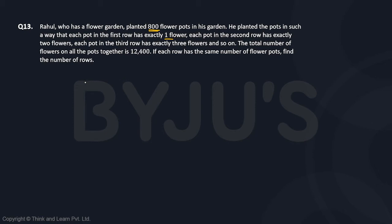Let the number of flower pots in each row be 'a' and the number of rows be 'b'. The first row has 'a' number of pots with one flower each, the second row again has 'a' pots with two flowers each, the third row has 'a' pots with three flowers each, and so on. The last row, the b-th row, has 'a' pots with b flowers each.